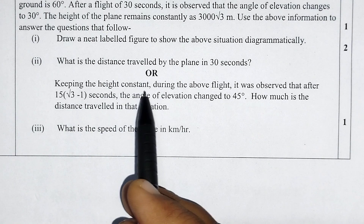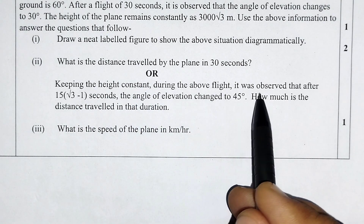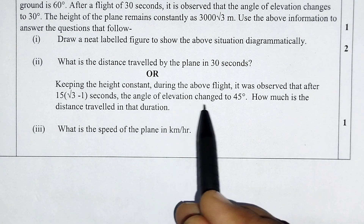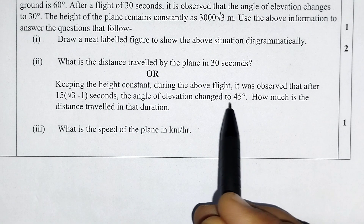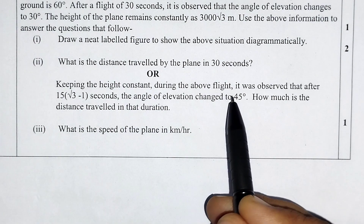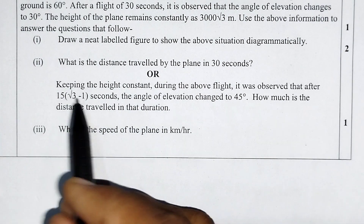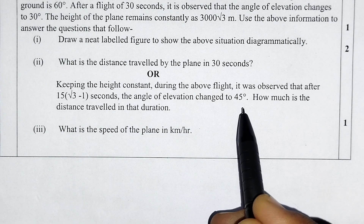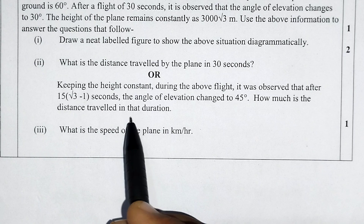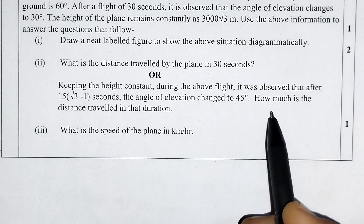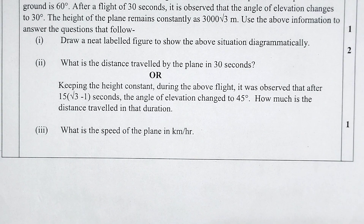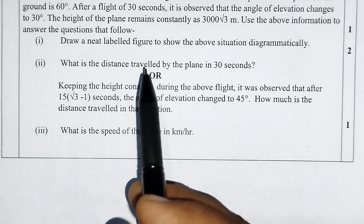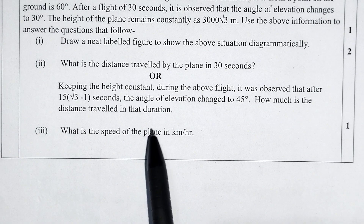Question R: Keeping the height constant during the above flight, it was observed that after 15(√3 − 1) seconds the angle of elevation changed to 45 degrees. How much distance is traveled in that duration? To solve this, we draw a new diagram and use the same tan θ formula.